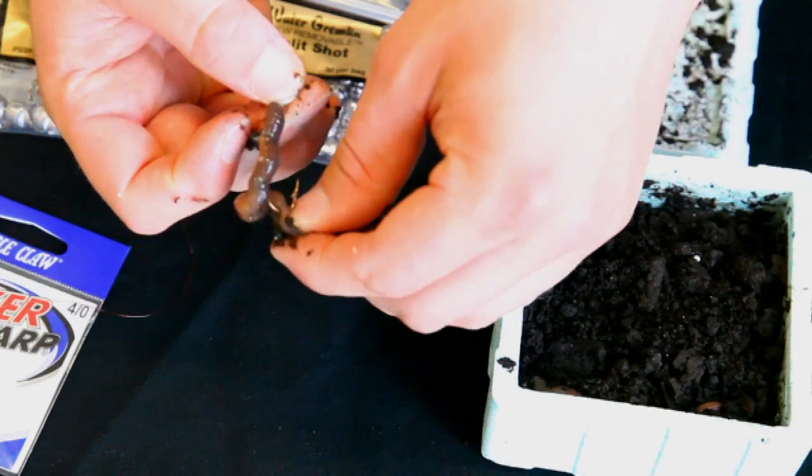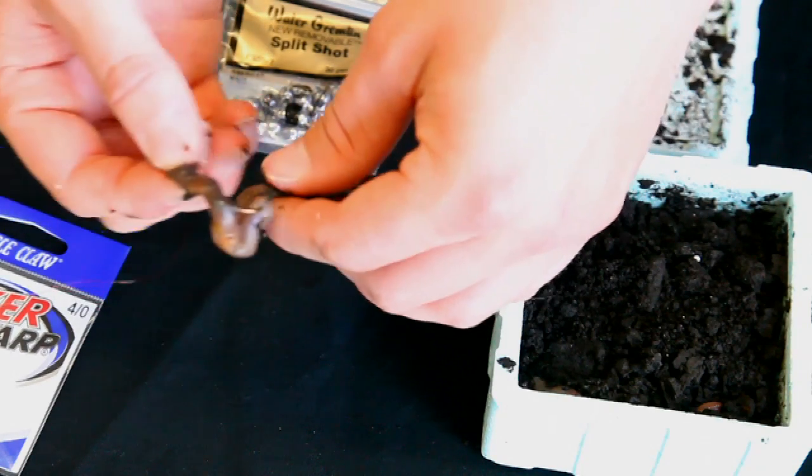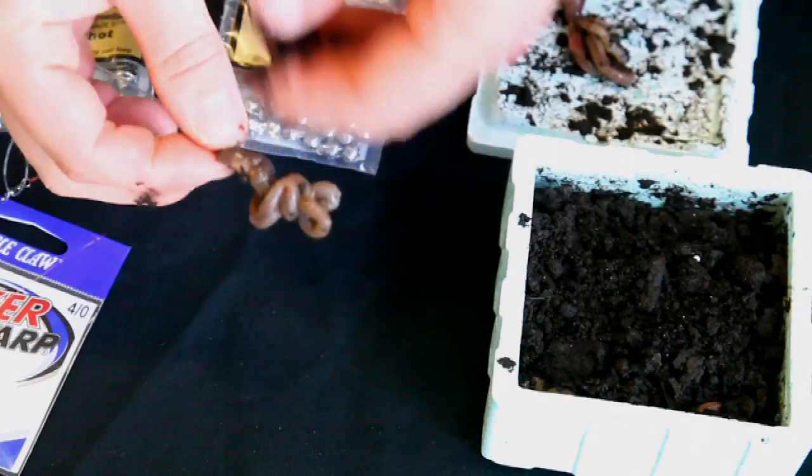You need to hook the body of the worm through its side a couple times and kind of knot them up on there. Just knot them up until you run out of worm.